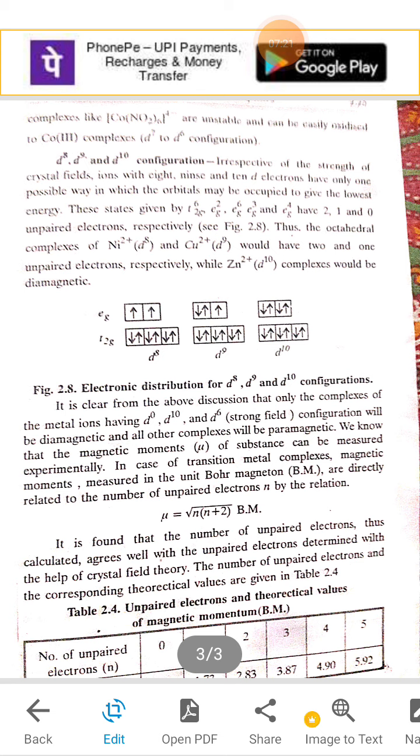n is the number of unpaired electrons present in the complex. The table of which is given below: unpaired electrons and theoretical values of magnetic movement, i.e. Bohr magneton.